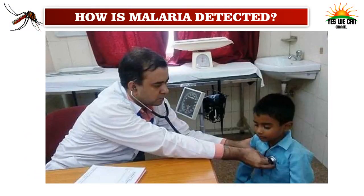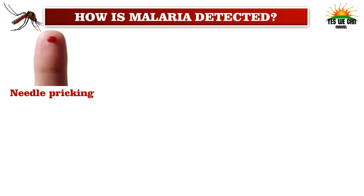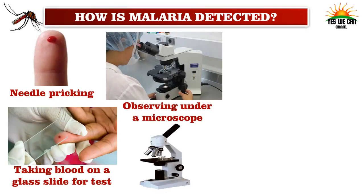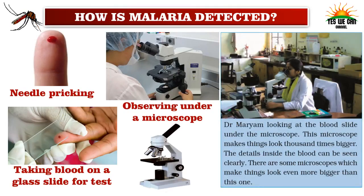When Rajat had fever, he went to a doctor. To find out the actual cause of fever, the doctor suggested a blood test. A needle is pricked in the finger — it feels like an ant bite. They take 2 to 3 drops of blood on a glass slide and send it for testing in a lab. The doctor observes it under a microscope. This microscope makes things look a thousand times bigger so that details inside the blood can be seen clearly. A microscope is an instrument used to see magnified images of tiny objects which cannot be seen with the naked eye.